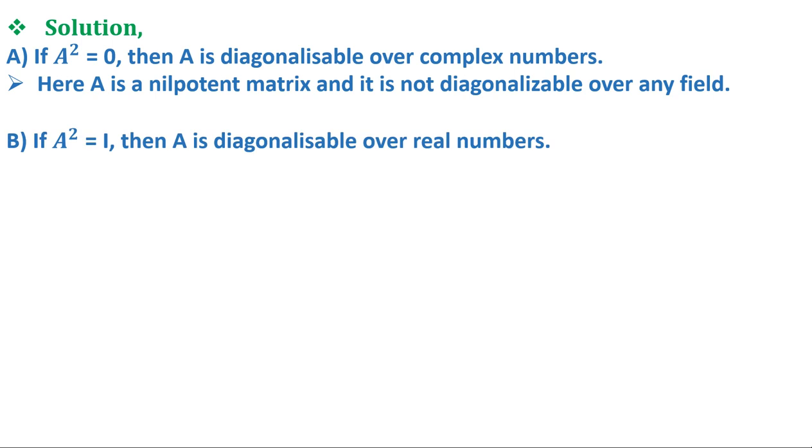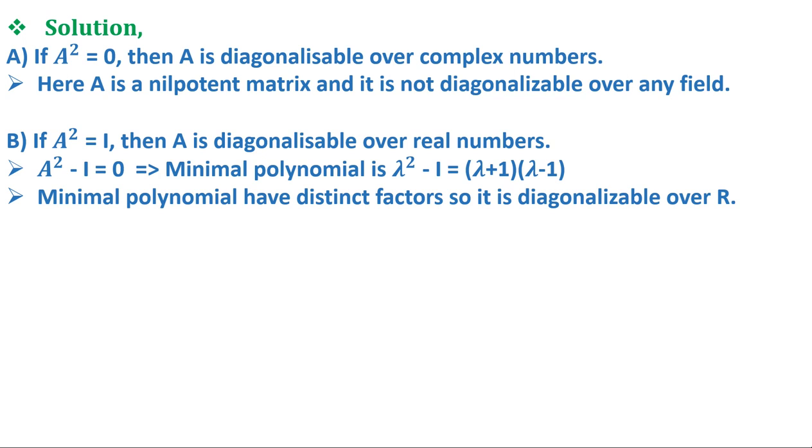Here we get A² - I = 0, which gives us minimal polynomial equals λ² - 1, which equals (λ + 1)(λ - 1). Here the minimal polynomial has distinct factors so it is diagonalizable over R, the set of real numbers. So it is true.